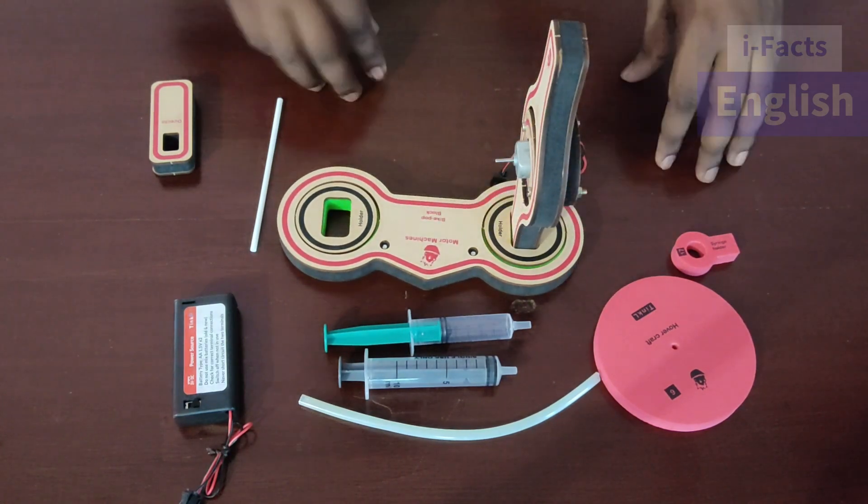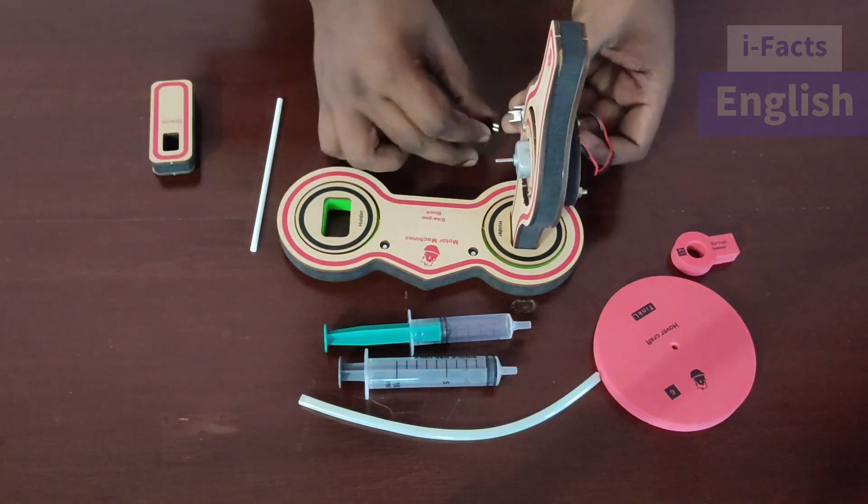One is for holding the wheel and another one is to hold the braking system. So we are placing a motor in one of the holders and we are connecting the motor to the power source.